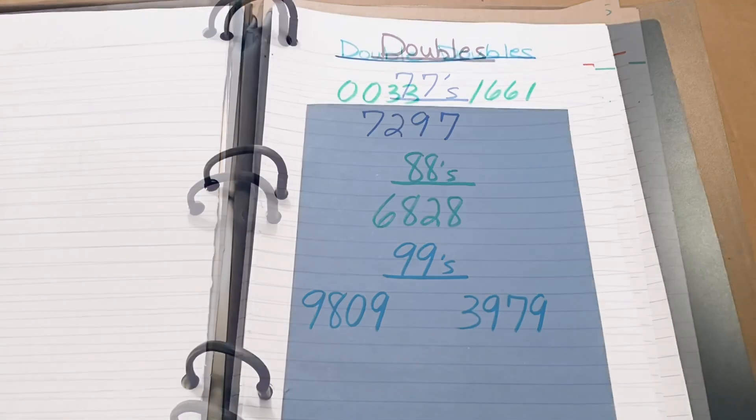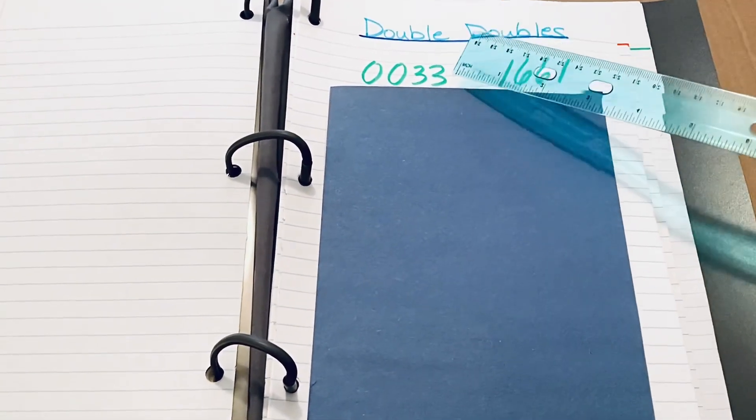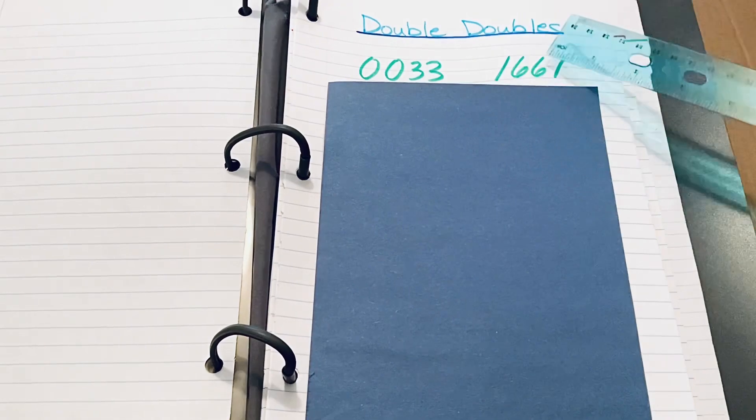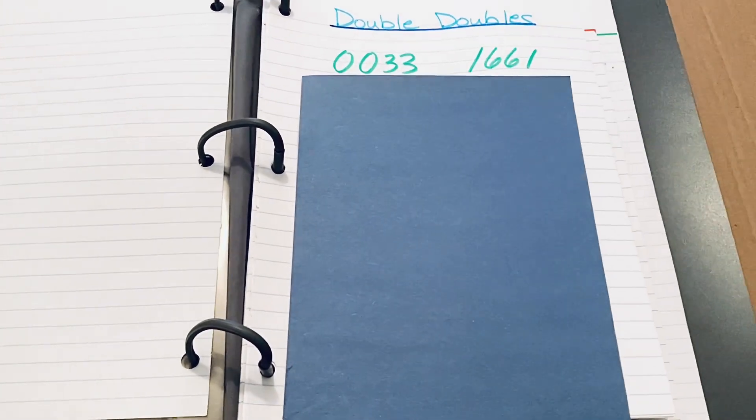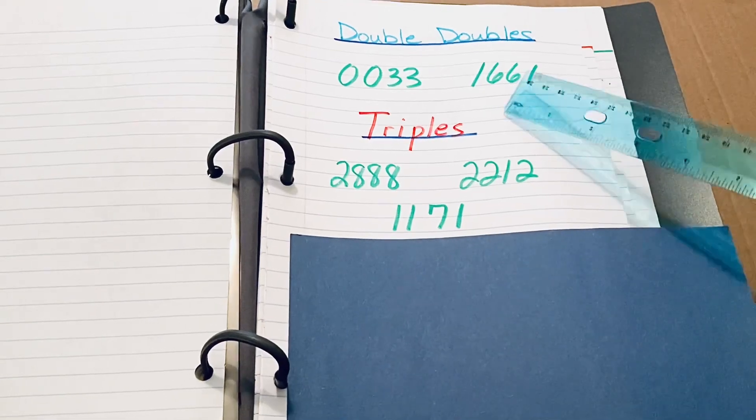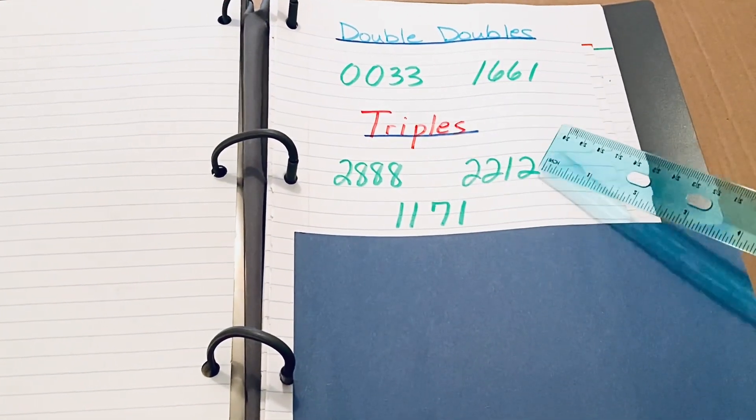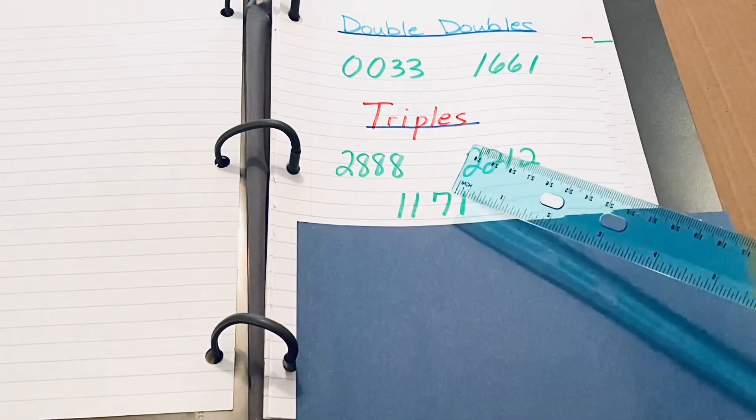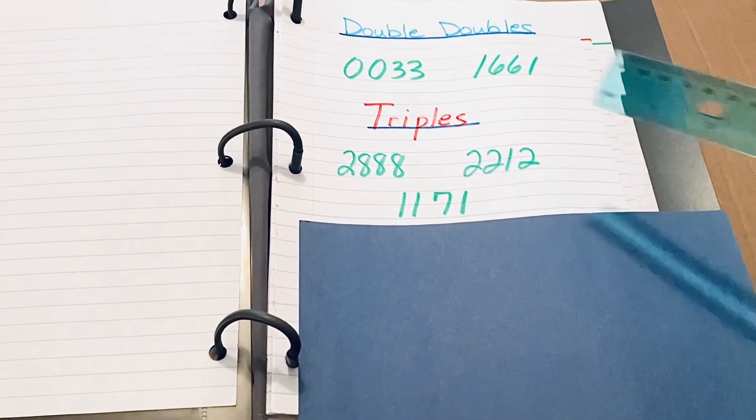This week, I have two double doubles numbers on the list, 0033 and 1661. And moving on to the triples on the list for this week, 2888, 2212, and 1171.